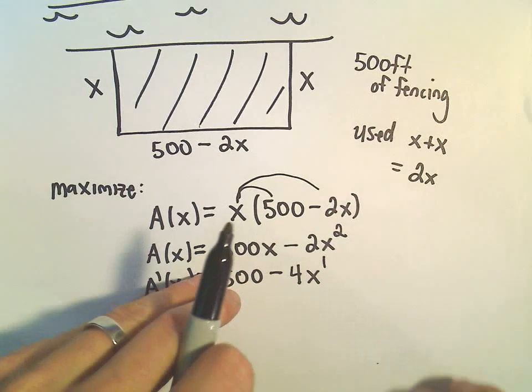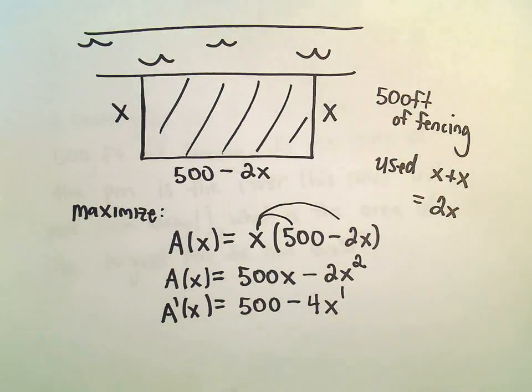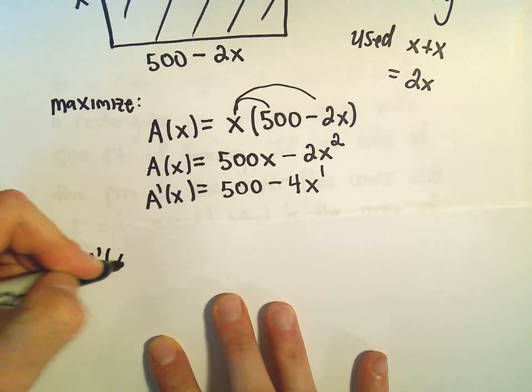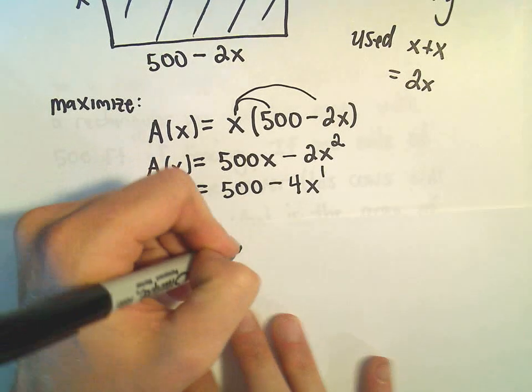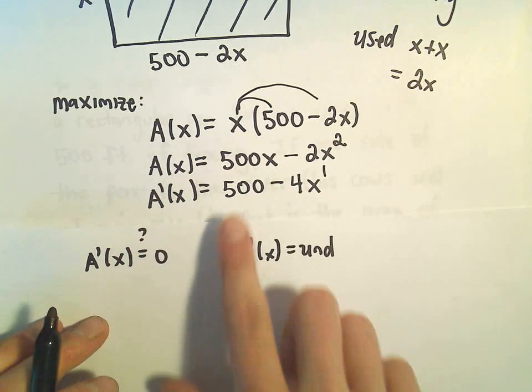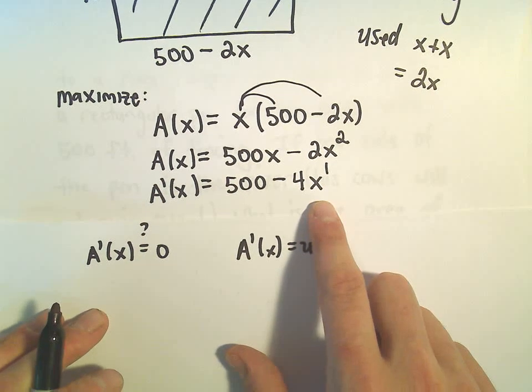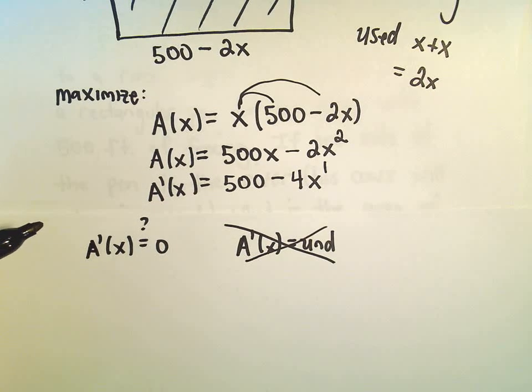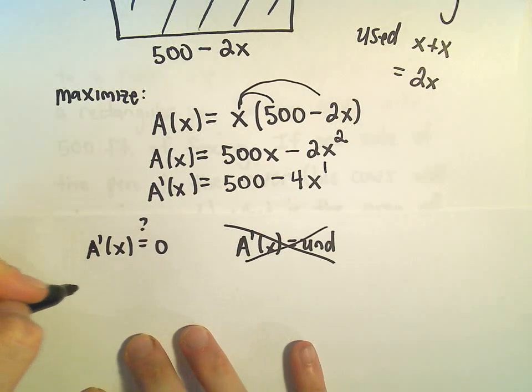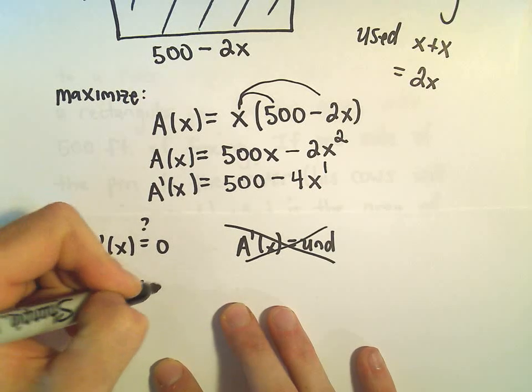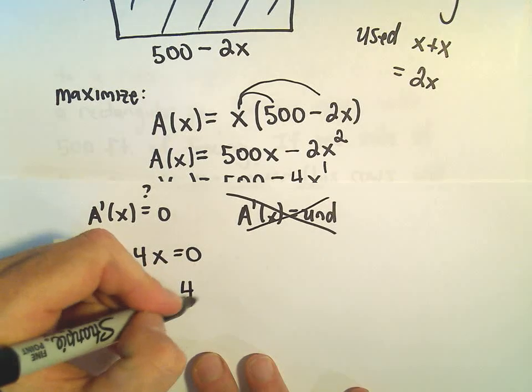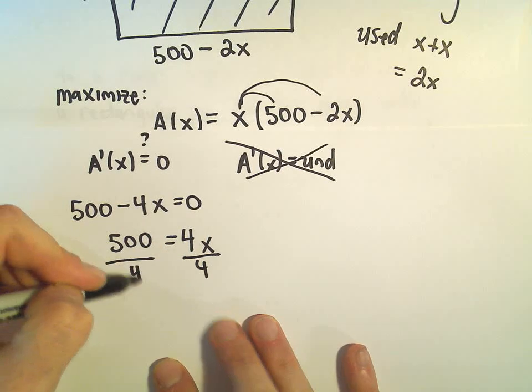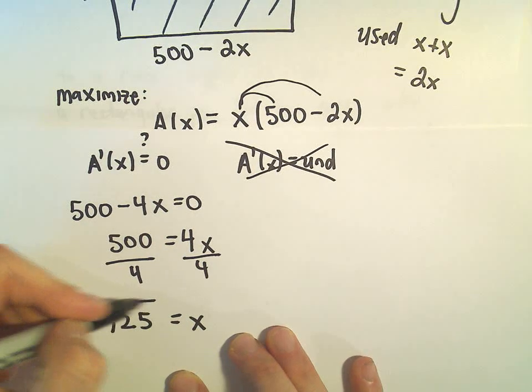And what we want to do now is find these critical points. So we want to take our derivative and set it equal to 0. We would also like to know where the derivative is undefined. But for this type of equation, 500 minus 4x, this is defined for all values of x. So we don't have to worry about solving that equation. We can certainly take the derivative and set it equal to 0. So 500 minus 4x equals 0. We can add the 4x to both sides. We can divide both sides by 4. And it looks like to me that's going to give us x equals 125.